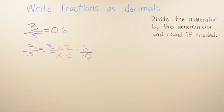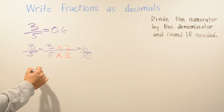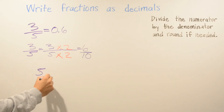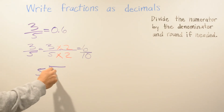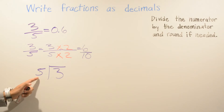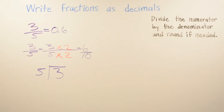Six over ten written as a decimal gives you 0.6 or 0.60. Now for the division method, we divide the numerator by the denominator and round if needed. Since three-fifths is less than a whole, our decimal will be less than one. We set up three divided by five — five does not go into three, so we need to extend the division.